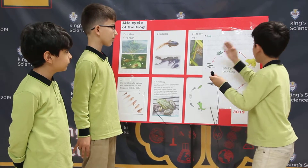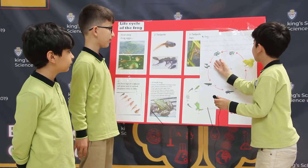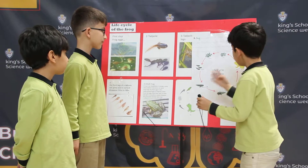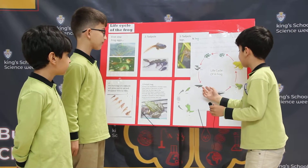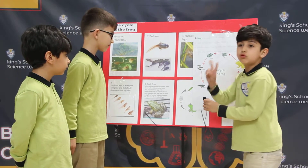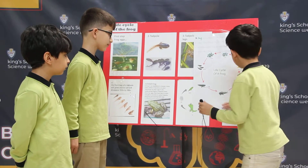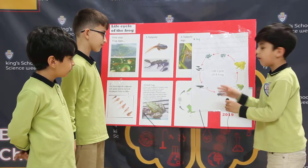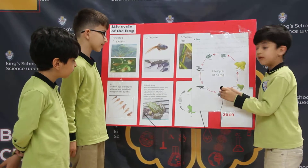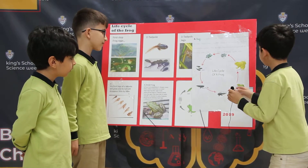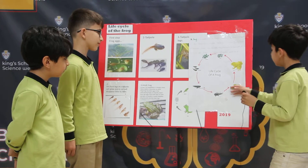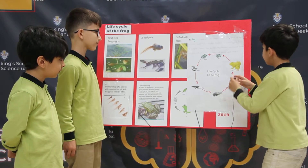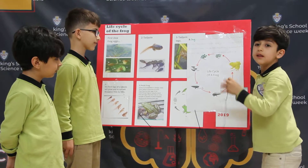First we have egg, second we have embryo, third we have tadpole, fourth we have frog with two legs, fourth we have tadpole with four legs, fifth we have young frog, sixth we have adult frog.